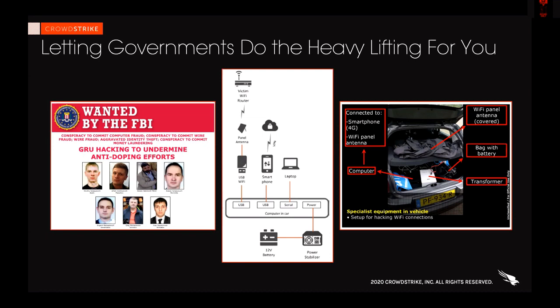The second round targeted the Canadian Centre for Ethics and Sport in Lausanne, Switzerland, in September 2016, with the end goal of compromising CCES networks in Canada and hopefully associated networks through WADA and others. The actors connected to and compromised the target individual's hotel Wi-Fi, pivoted into their laptop, deployed known Fancy Bear malware — X-Agent and X-Tunnel — and then compromised their email account to send internal phishing emails to other members of that individual's organization. The material extracted was later exposed by the Fancy Bears hack team's influence operations between 2016 and 2017.